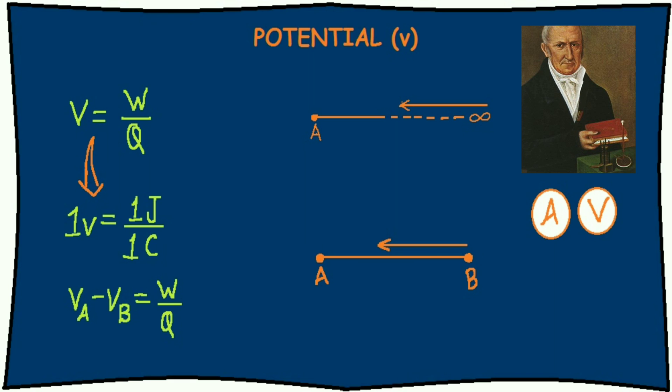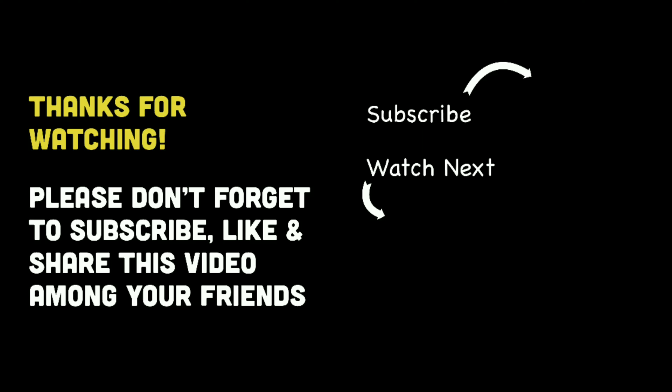Potential difference. Work done per unit charge in moving unit positive charge from one point to other point. Again, the unit of voltage is Volt. One thing to note is that current is measured by ammeter and voltage is measured by a voltmeter. We will discuss about them after a while.